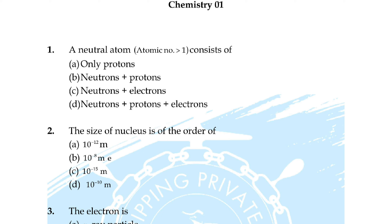Question number 30: the product obtained on fusion of BaSO₄ and Na₂CO₃ is — correct answer is option A. Question number 31: which is an ore of potassium — option A: carnallite, B: cryolite, C: site, option D: dolomite? Correct answer is option A.